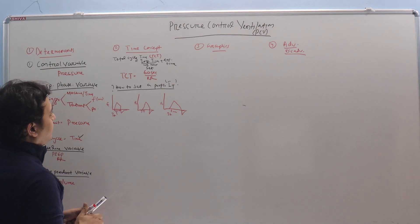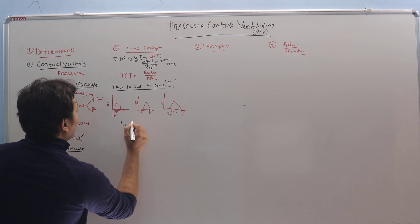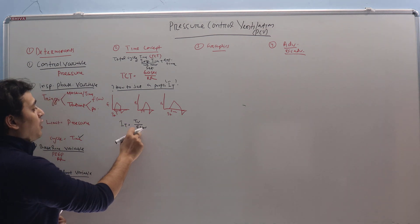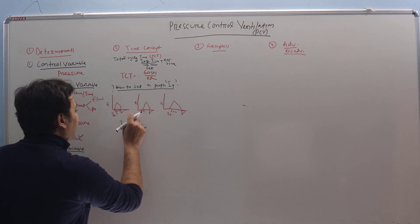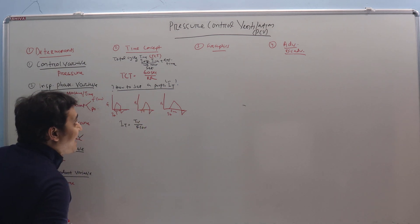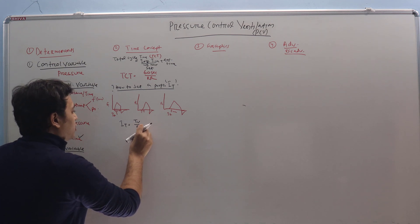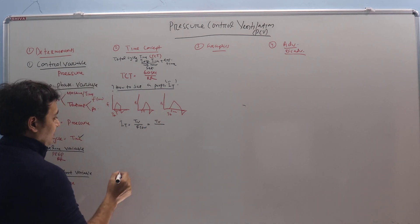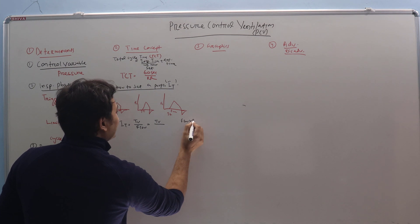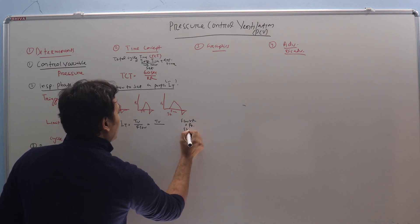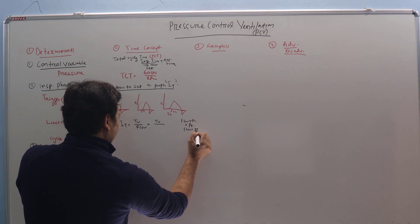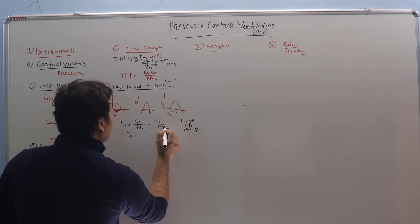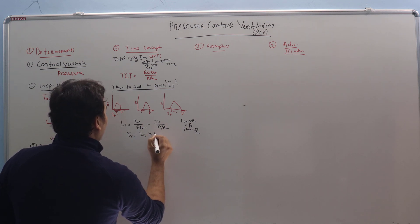Using another formula: Inspiratory Time equals tidal volume divided by flow. In pressure control ventilation, we are setting the Inspiratory Time, not the tidal volume or the flow — so those will be variable. That is one of the advantages. Since we know that flow times resistance equals pressure, flow equals pressure divided by resistance. Replacing flow, tidal volume equals Inspiratory Time times pressure divided by resistance, so with resistance constant, tidal volume is proportional to Inspiratory Time and pressure.